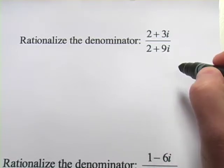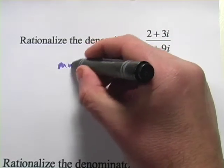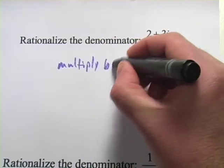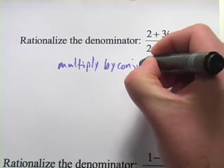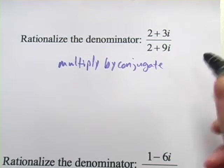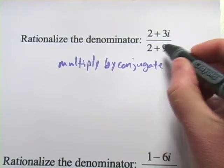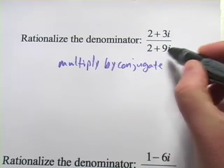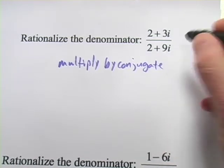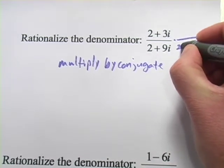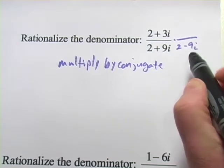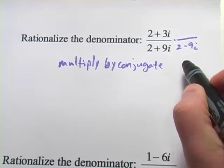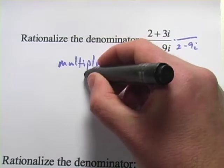The way this works is you have to multiply by the conjugate. The conjugate of the denominator is the same terms, but with a different sign in the middle. So the conjugate of 2 plus 9i is 2 minus 9i. I'll show you why we choose that conjugate in a minute.